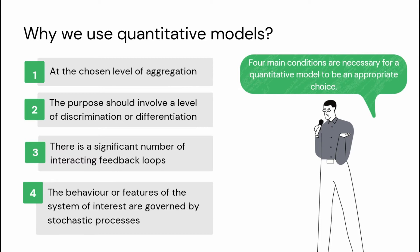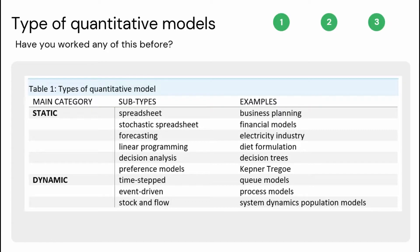Next, I am going to introduce the types of quantitative models. There are two types: dynamic and static models. Dynamic models are those where the set of calculations comprising the model is repeated several times. The initial values of the variables in the current set of calculations are taken from the results of the previous set of calculations.